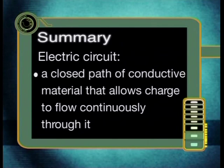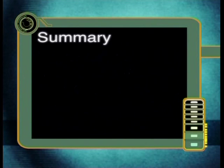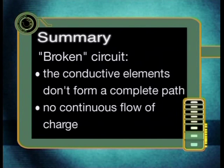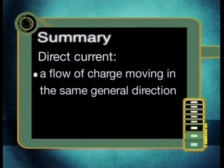Let's quickly summarise what we have learnt from the demonstration using the circuit board. An electric circuit is an unbroken loop or closed path of conductive material that allows charge to flow continuously through it. If a circuit is broken, that means its conductive elements no longer form a complete path and there will be no continuous flow of charge through it. The current in this circuit is direct current — it is a flow of charge moving in the same general direction. Remember that any break in an electrical circuit will stop the electric current flowing through that circuit.